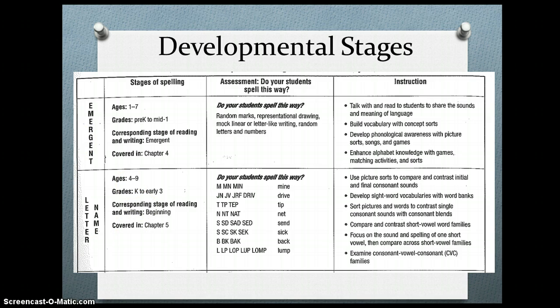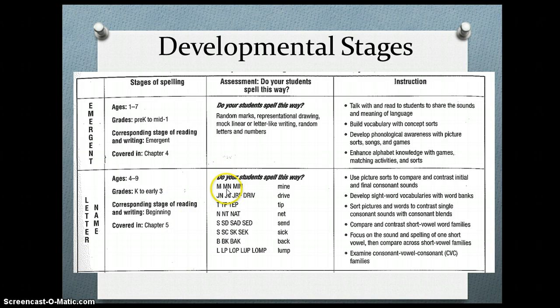The next stage is the letter-name alphabetic spelling stage, ages four to nine, grades kindergarten to early third grade. As discussed with the early phonemic stage, initial and final consonant sounds are typically represented but vowel sounds aren't always well represented. Students also use the actual name of the letter as a sound strategy. This stage is also called semi-phonetic because only some phonemes are represented. Toward the end of this stage there is starting to be consistent use of vowels, especially long vowels that say their name — for example, TIM for 'time.'